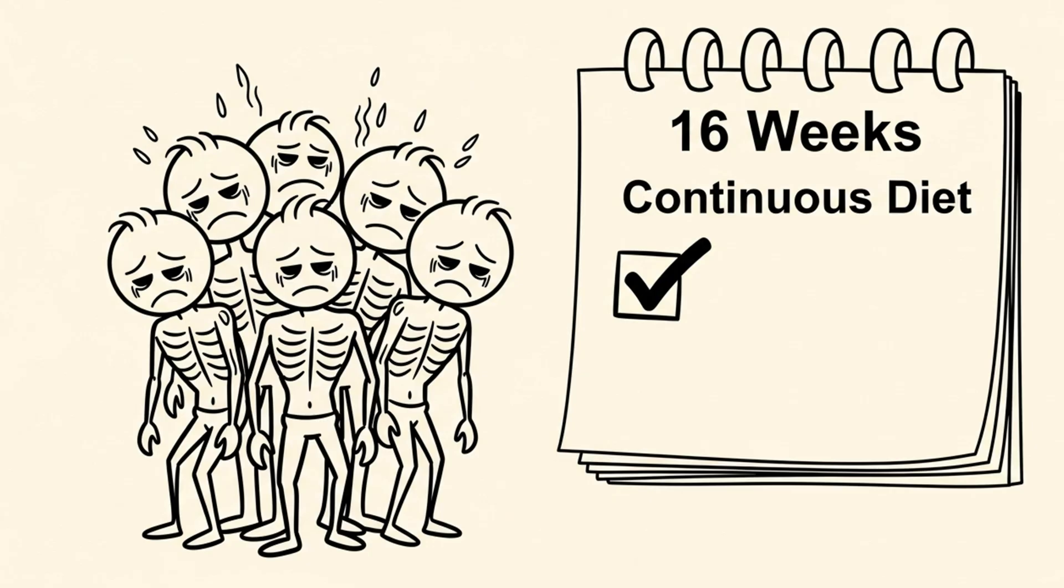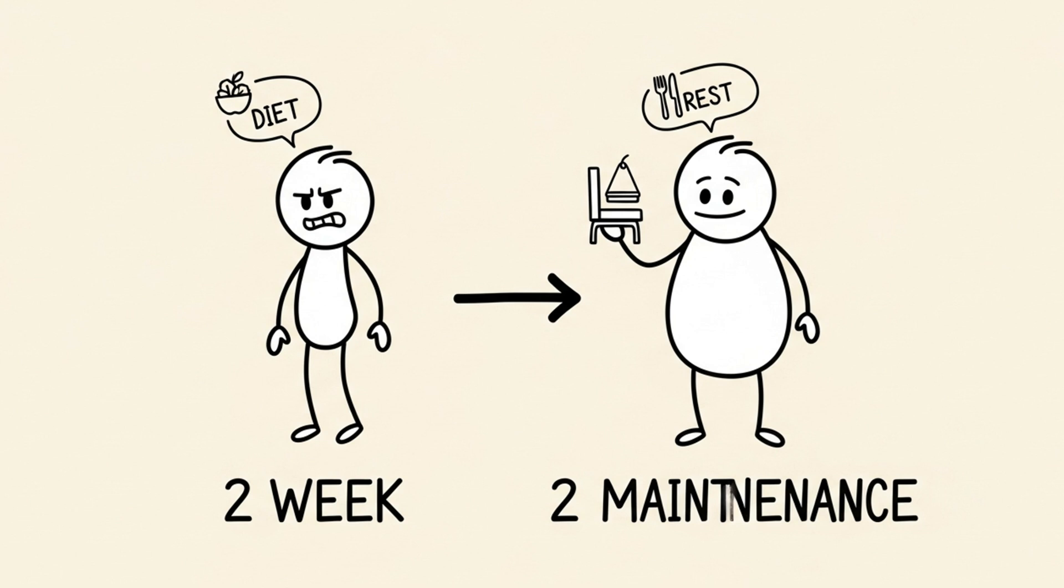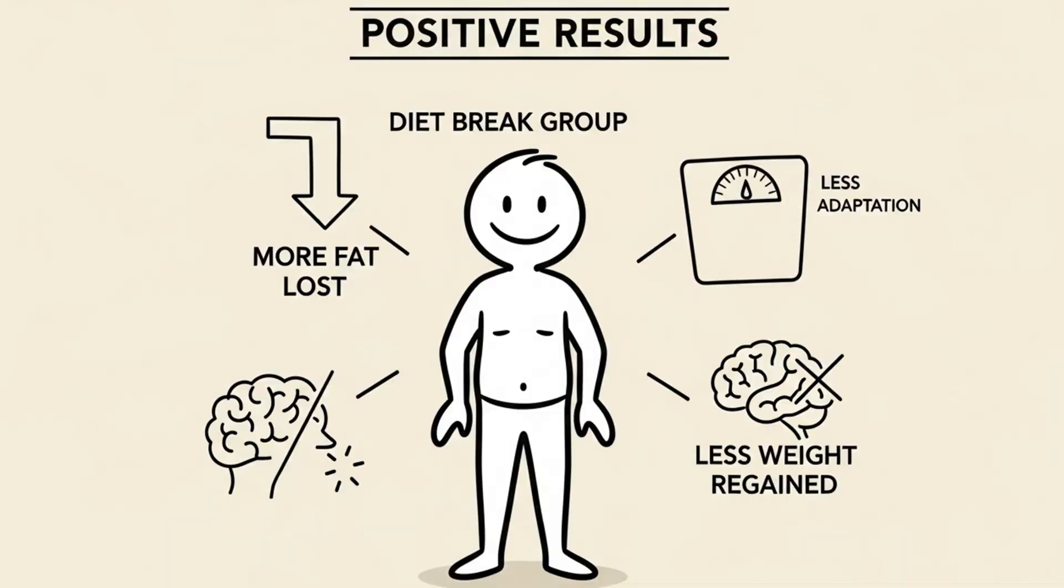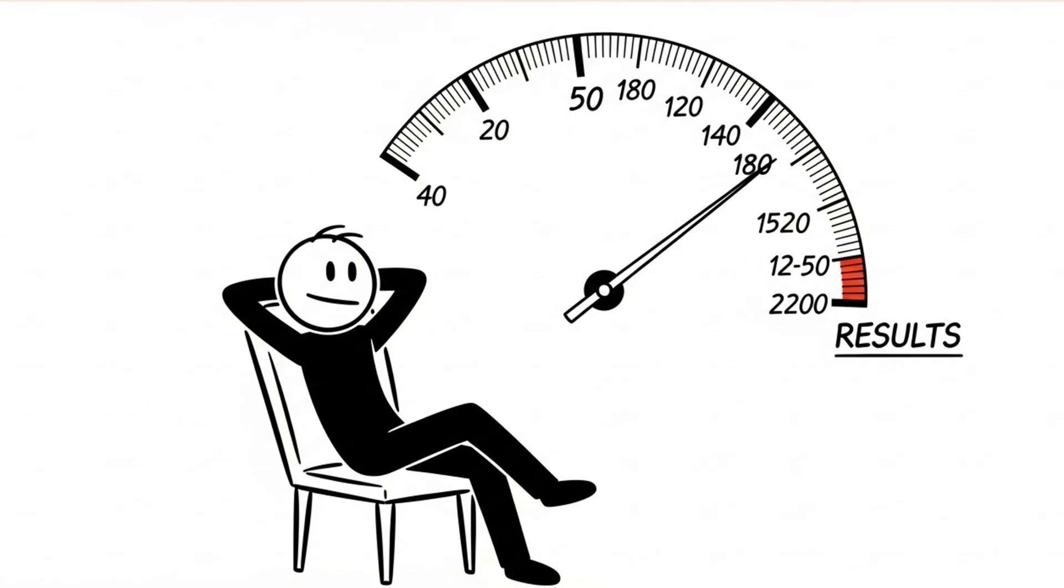A 2017 study called the Matador Study had one group diet continuously for 16 weeks. They had another group diet for two weeks, then take two weeks off, eating at their new maintenance, and repeated this. The result, the diet break group lost more fat, regained less weight after, and showed less metabolic adaptation. Taking a planned break can actually speed up your long-term results.